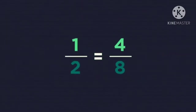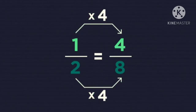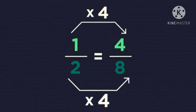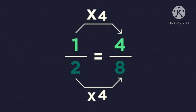Equivalent fractions are not too hard to find. All you have to do is multiply the top and the bottom by the same number each time. So come on, remember these steps — it's time to put your multiplication skills to the test.